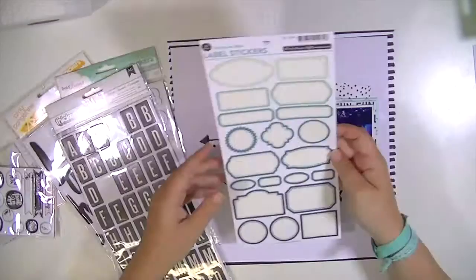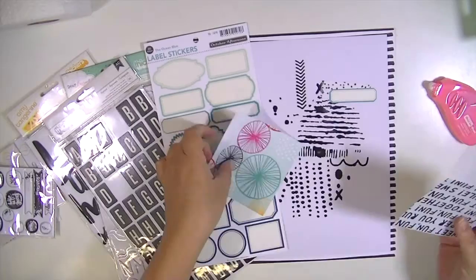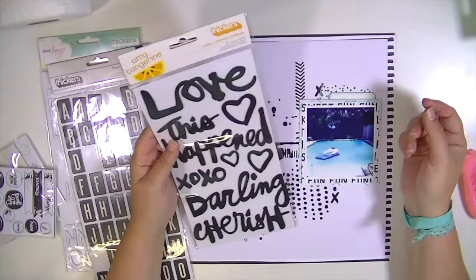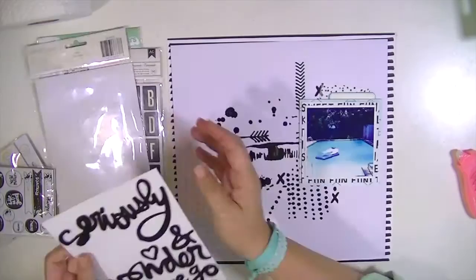I'm using a piece of this washi tape from the Dear Lizzie Fine and Dandy line and just some various embellishments. I kept this really simple. I added this little label but I end up taking it off. Now I'm applying some permanent adhesive to my layers so that they don't go anywhere. I'm going to use a foam word thicker from Amy Tangerine, one that says Seriously.